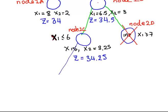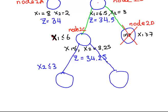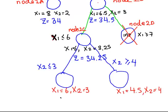We branch x2, x2 is less than or equal to 3, and x2 greater than or equal to 4. In this case, we would get two possible answers here. We would get x1 equals 6, x2 equals 3, and here we would get x1 equals 4.5 and x2 equals 4. But when we evaluate the objective functions, we're going to stop here at node 3e anyway, and this is node 3f.